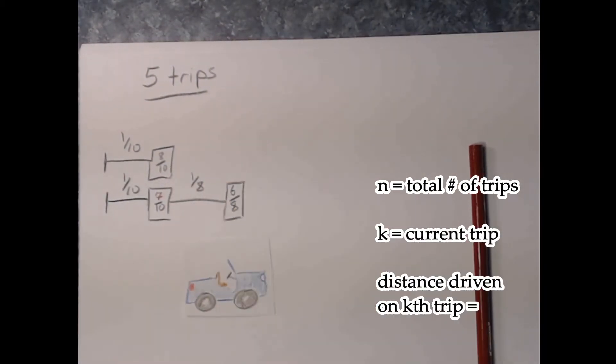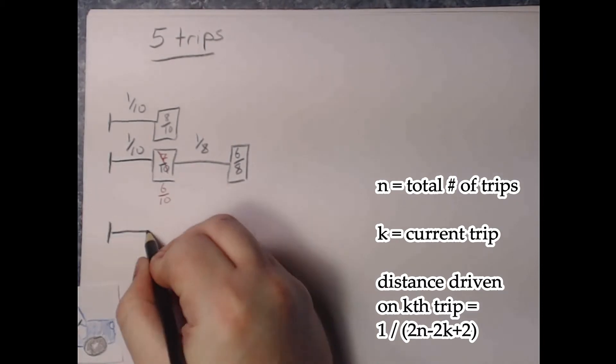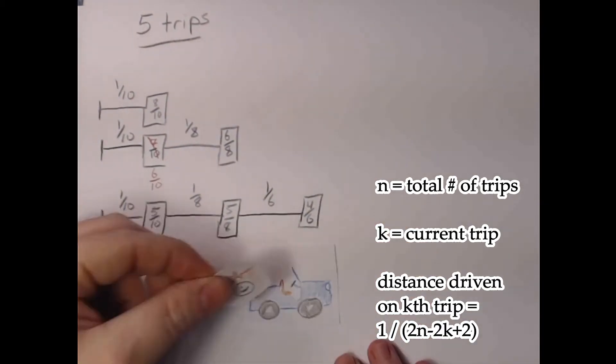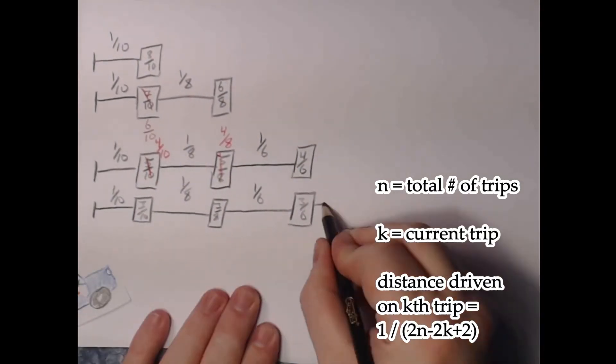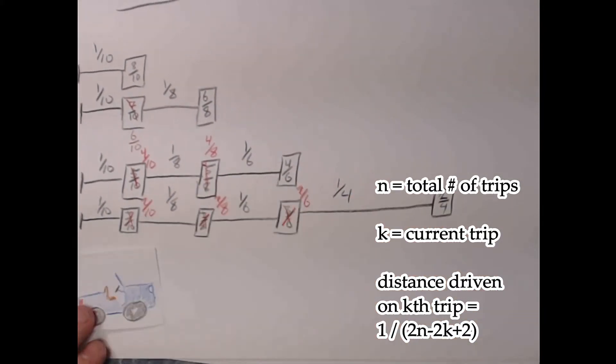For example, say we want to go five trips, leaving exactly enough fuel at very precise increments so that we have enough to return to base and refuel. How far would we have gone?